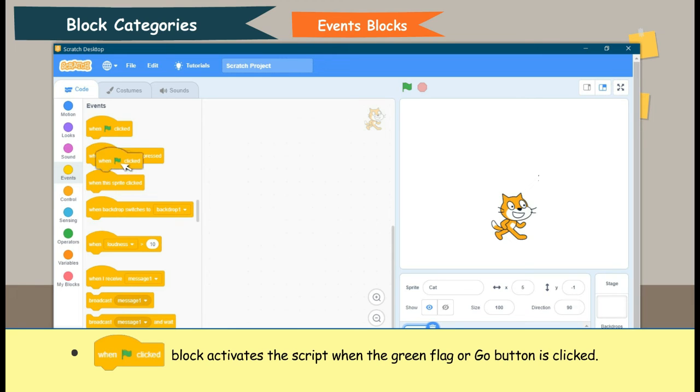When green flag clicked block activates the script when the green flag or go button is clicked.